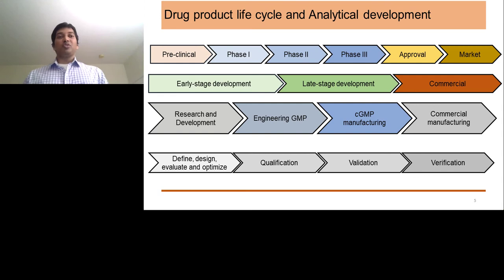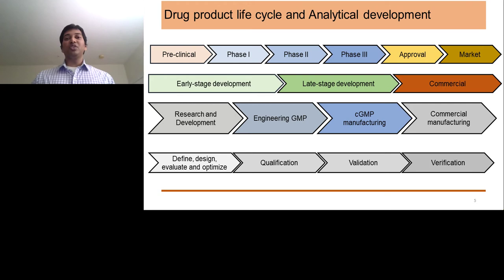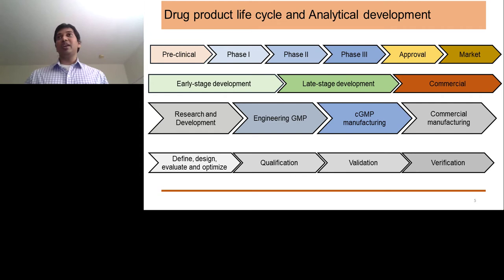I want to talk a little bit about the drug development cycle. The drug development cycle includes a preclinical phase, a phase one, phase two, and a phase three. Once you reach phase three, you have an approval process and go to market. These phases can also be thought of in terms of development areas: the early stage development is considered to be preclinical and phase one, whereas phase two and phase three are considered late stage development.